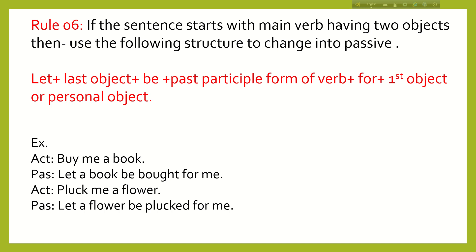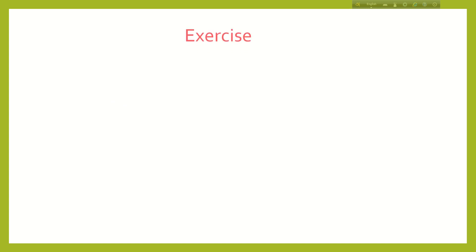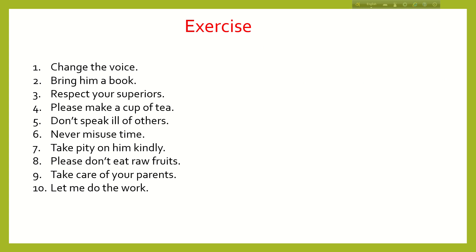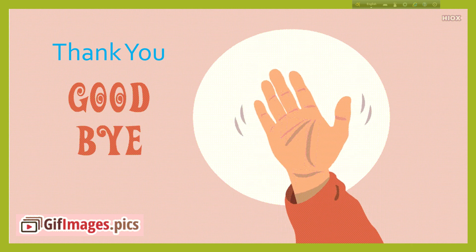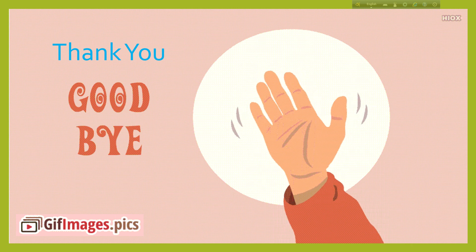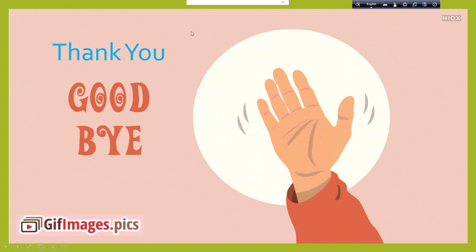It's a very easy rule. The rules for changing imperative sentences into passive voice are actually easier than those for assertive and interrogative sentences. I think all of you are clear on the six rules. Here are some examples in active voice — please transfer them into passive voice and submit your work to my inbox. Practice more and more from any book, especially the Advanced Learner's book. If you find any difficulty, you can ask me. Thank you.